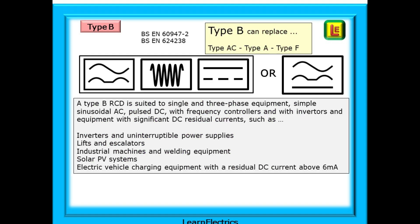Type B RCDs can replace all other RCD types — type AC, type A, and type F. A type B RCD is suited to single phase and three phase equipment, simple sinusoidal AC, pulse DC with frequency controllers, inverters, and equipment with significant DC residual currents — such as uninterruptible power supplies, lifts, escalators, industrial machines, welding equipment, solar PV systems, and electric vehicle charging equipment with a residual DC current above 6 milliamps.